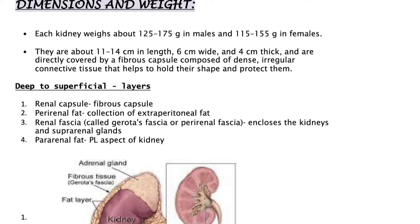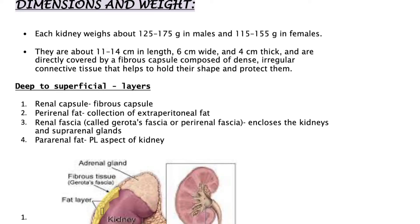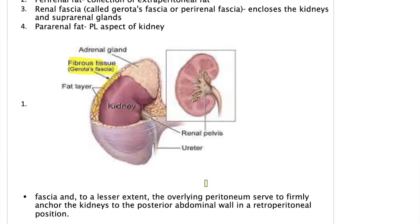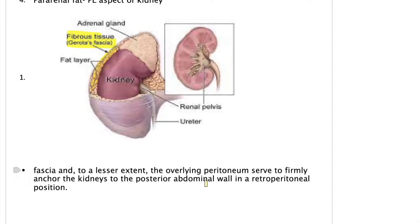From deep to superficial, the layers are: first the renal capsule, which is a very thick and strong fibrous capsule; then the perirenal fat layer; then the renal fascia, also called Gerota's fascia or the perirenal fascia; and finally the pararenal fat, which is mostly in the posterolateral aspect. These fasciae and the overlying peritoneum anchor the kidney to the posterior abdominal wall.